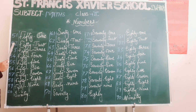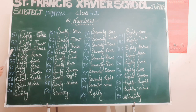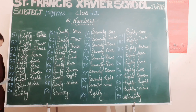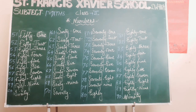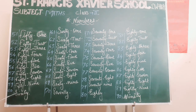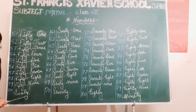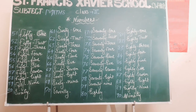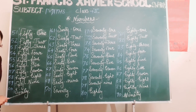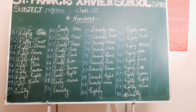That pattern applies for 52, 53, 54, 55, 56, 57, 58, 59. And for the spelling of 60: S-I-X-T-Y, 60.